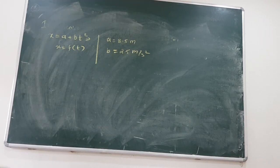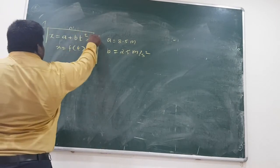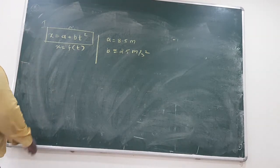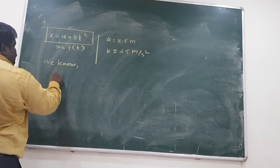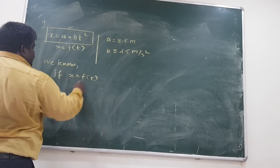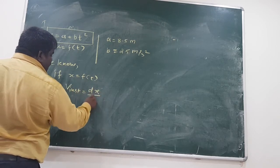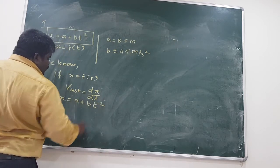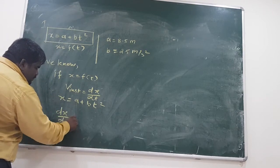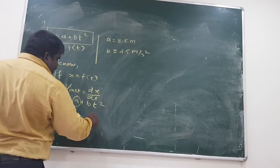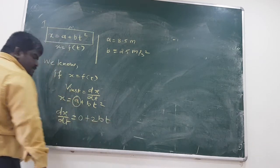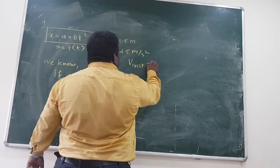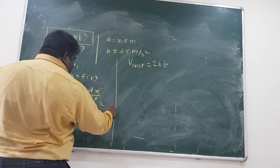So this is the profile of the motion — also called the equation of motion. We know: if x is f of t, then v instantaneous is given by dx by dt. Here x equals a plus bt squared, so dx by dt equals 0 plus 2bt — that is 2bt. So the instantaneous velocity equation is 2bt.